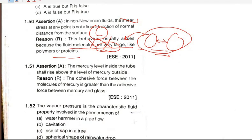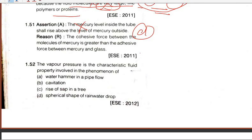Mercury level inside the tube falls below the level of mercury in the container, so D will be the answer. Water level will rise because in water the adhesive force is greater than the cohesive force, while in mercury the cohesive force is greater, causing it to fall.